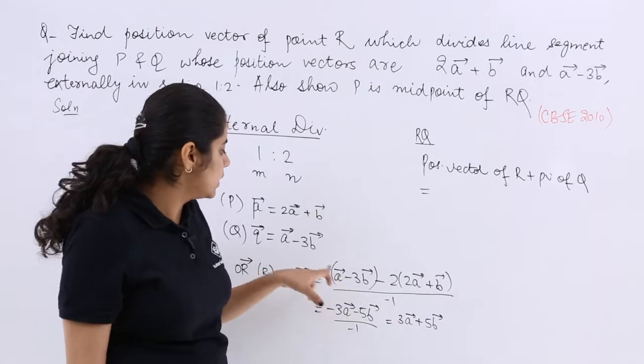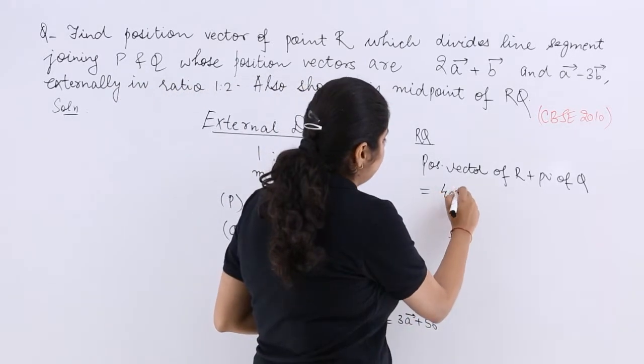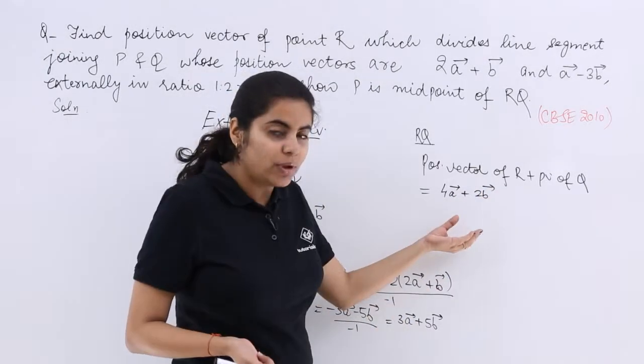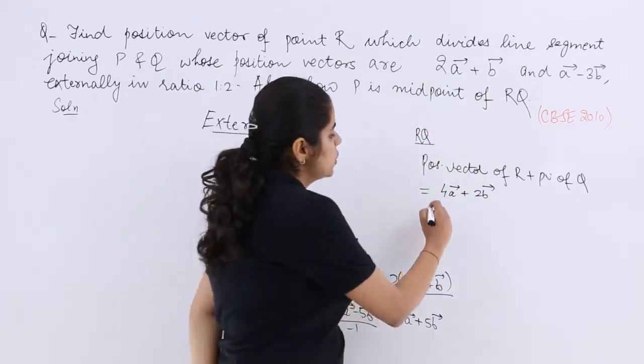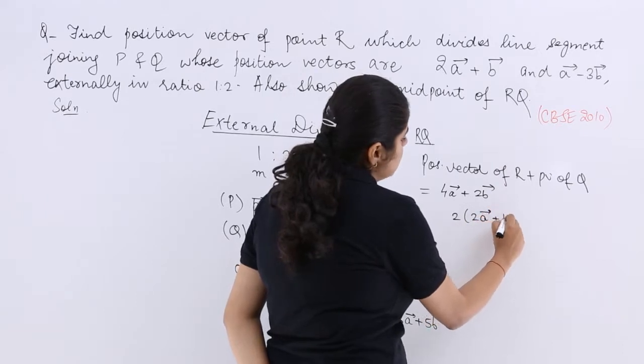So it is 4A, this is 2B. So this is 4A plus 2B. Now 4A plus 2B is exactly the double of 2A plus B. So if I have to say that it is twice of 2A plus B.